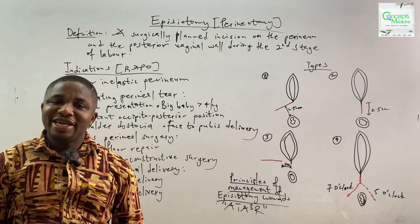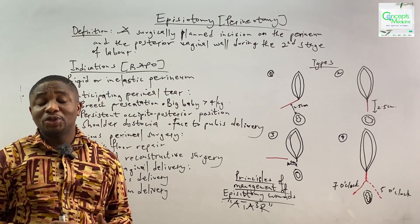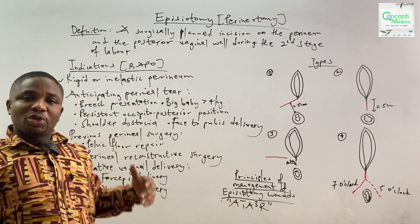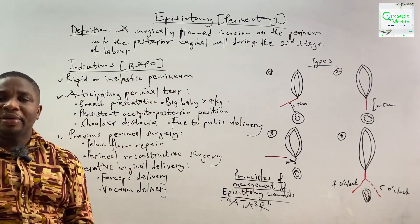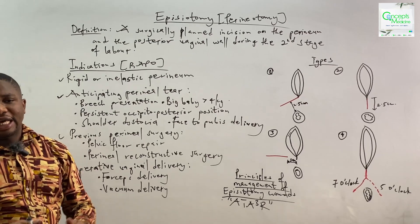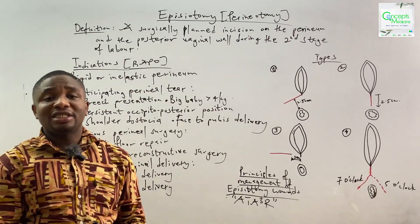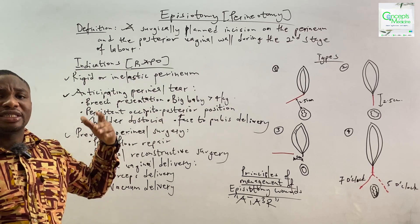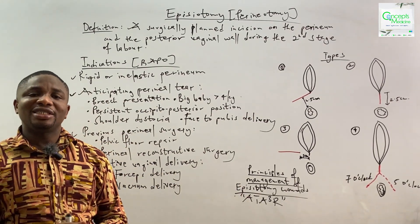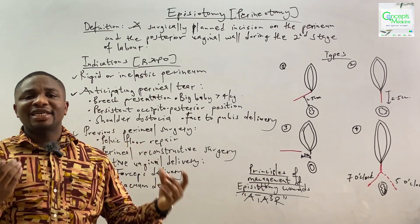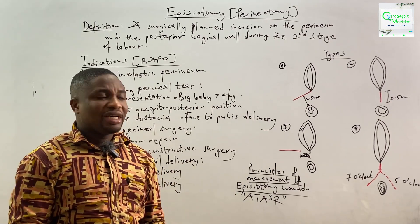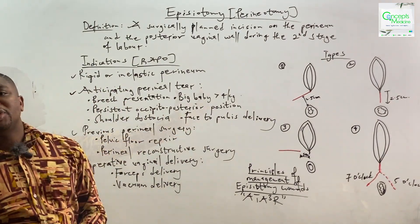Now let's look at the indications for perineotomy or episiotomy. You can use the acronym RAPORT. We are looking at: R — rigid or inelastic perineum; A — anticipating a perineal failure. Conditions that will precipitate a perineal failure include breech presentation, big baby greater than 4 kg, shoulder dystocia, persistent occipito-posterior position, and finally, it's-to-pubes delivery.